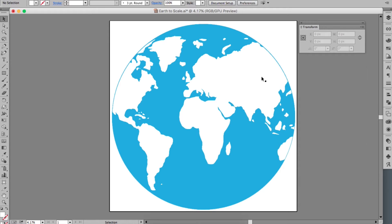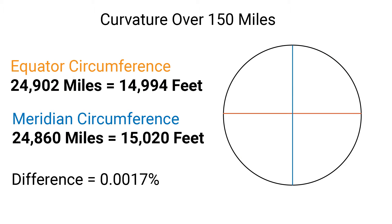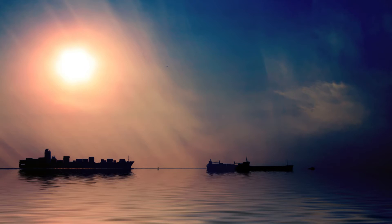Visually, the change from a perfect circle is basically non-existent. For curvature calculations, the difference from a perfect sphere is incredibly small. For example, the curvature drop over 150 miles on the equator would be 14,994 feet, and on the meridian line 15,020 feet — again a difference of only 0.0017 percent. So while technically not nothing, we most likely won't need to be that exact, though I'll factor it in when a proof requires a very precise number.